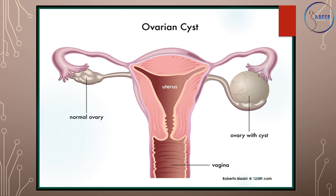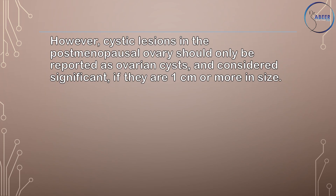The exact prevalence is unknown given the limited amount of published data and the lack of established screening programs for ovarian cancer. However, studies have estimated the incidence to be anywhere between 5% and 17%. The greater use of ultrasound in gynecological practice and the widespread use of other imaging techniques such as CT and MRI mean that an increasing proportion of cysts will be found incidentally. Cystic lesions in the postmenopausal ovary should only be reported as ovarian cysts and considered significant if they are 1 cm or more in size.